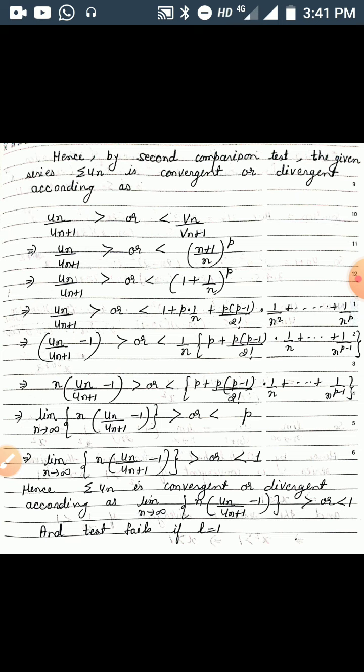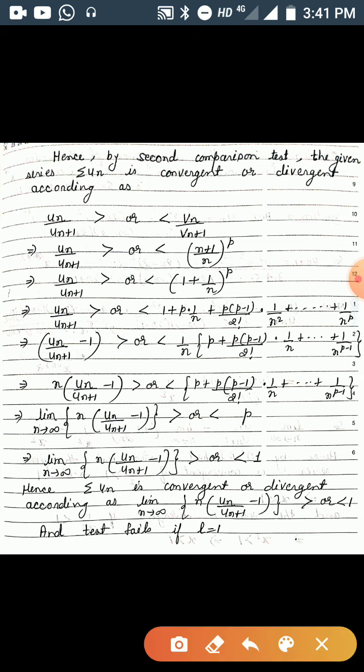So u_n/u_{n+1} is greater than or less than (1 + 1/n)^p. Expanding this by the Binomial Theorem, we get 1 + p*(1/n) + p(p-1)/2! * (1/n²) + ... Shifting the 1 to the left-hand side, we get u_n/u_{n+1} - 1 is greater than or less than p/n + p(p-1)/(2!*n²) + ... .